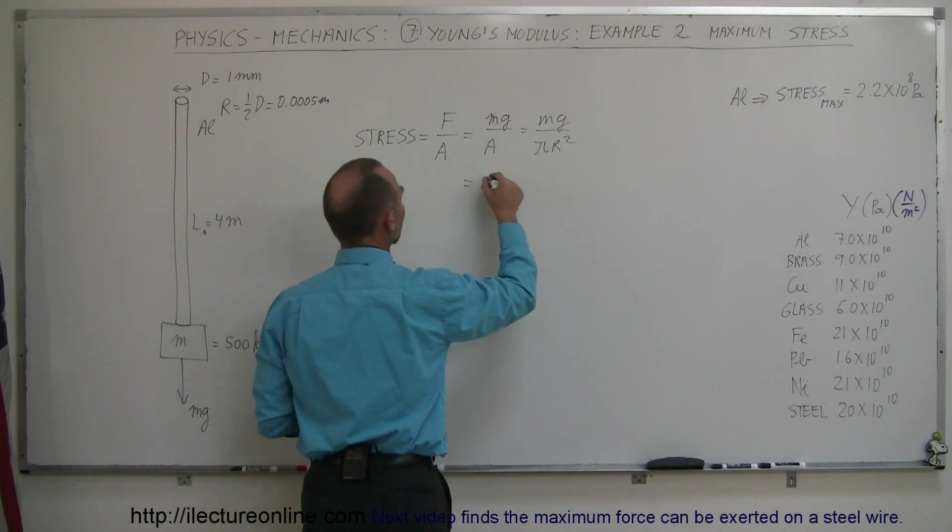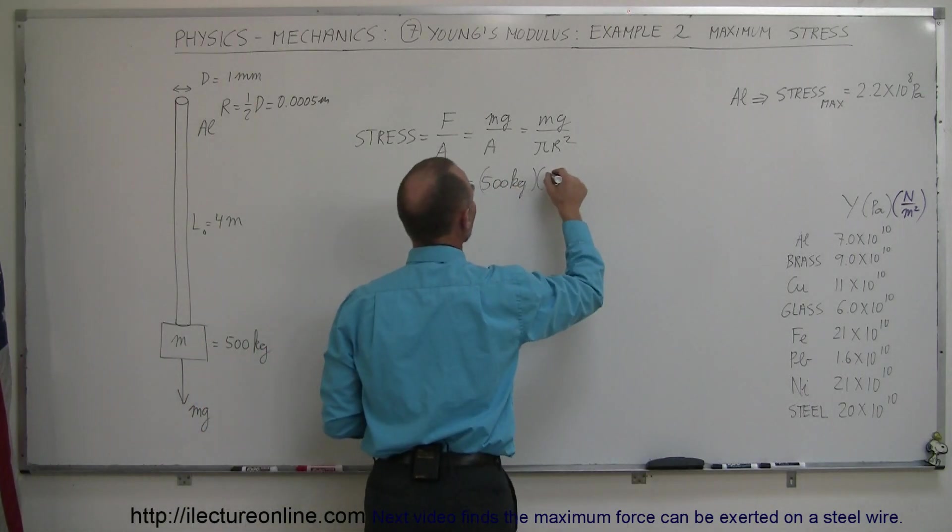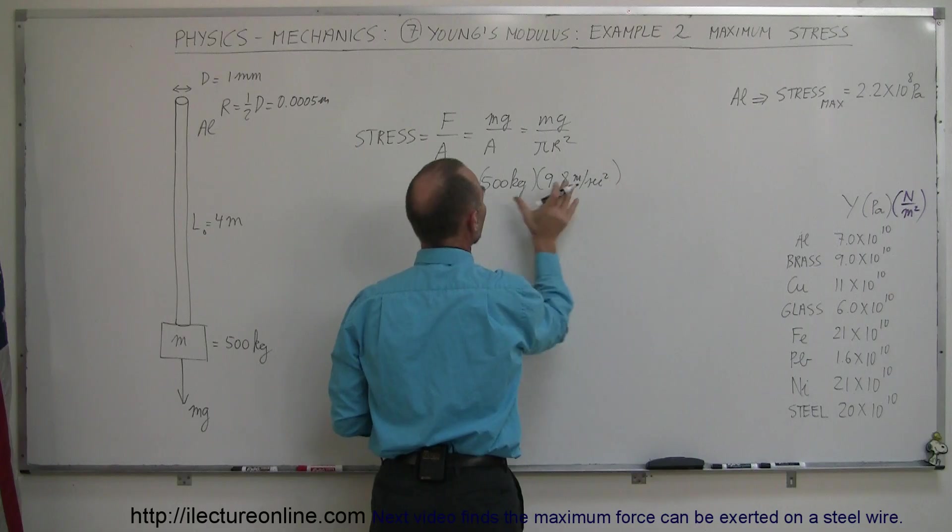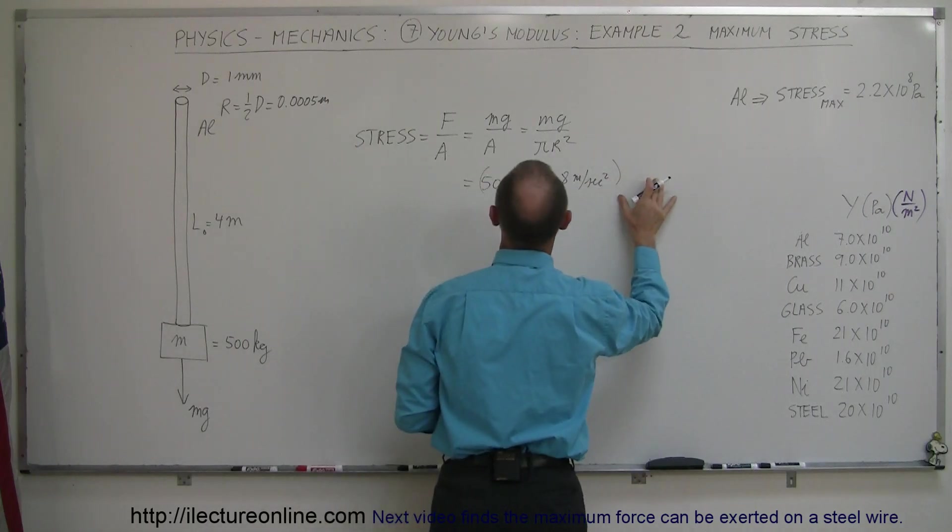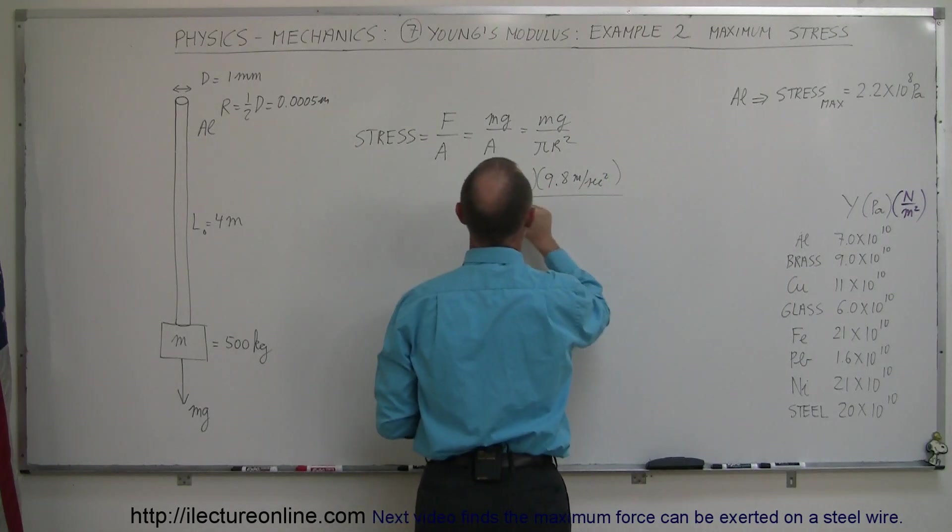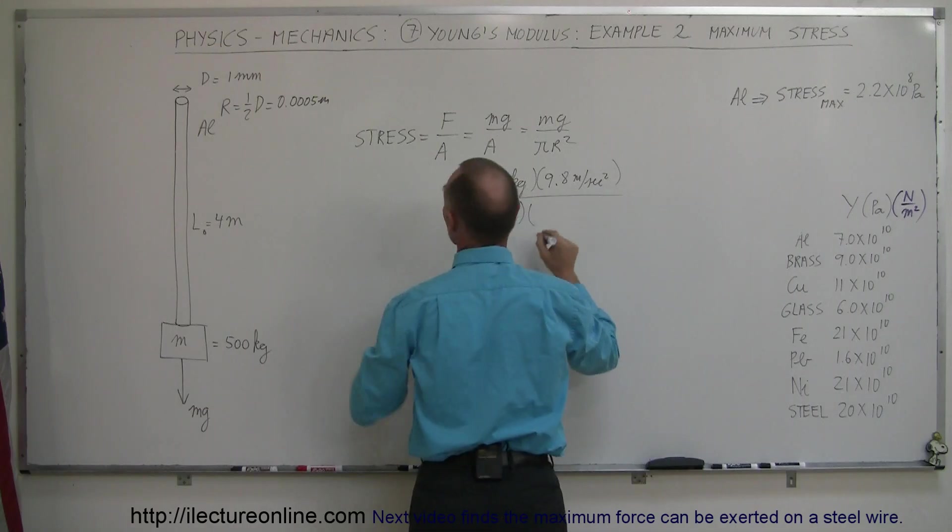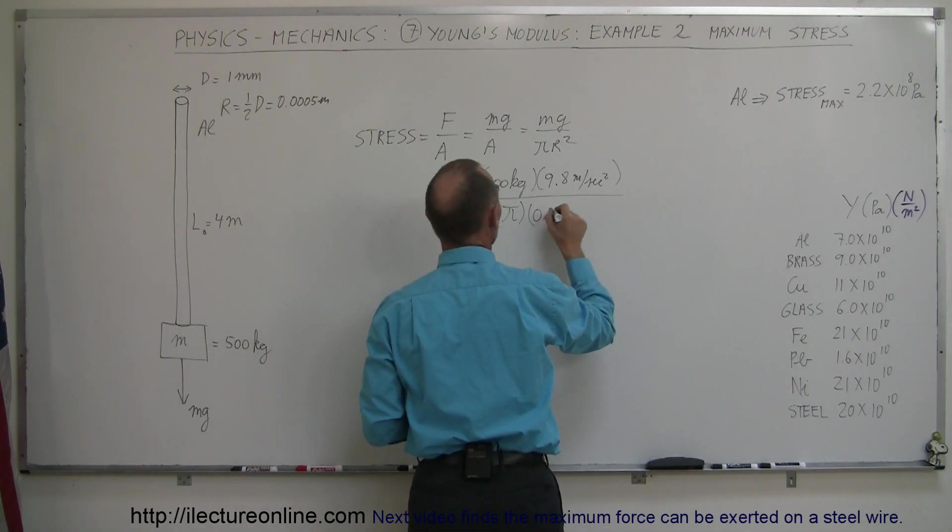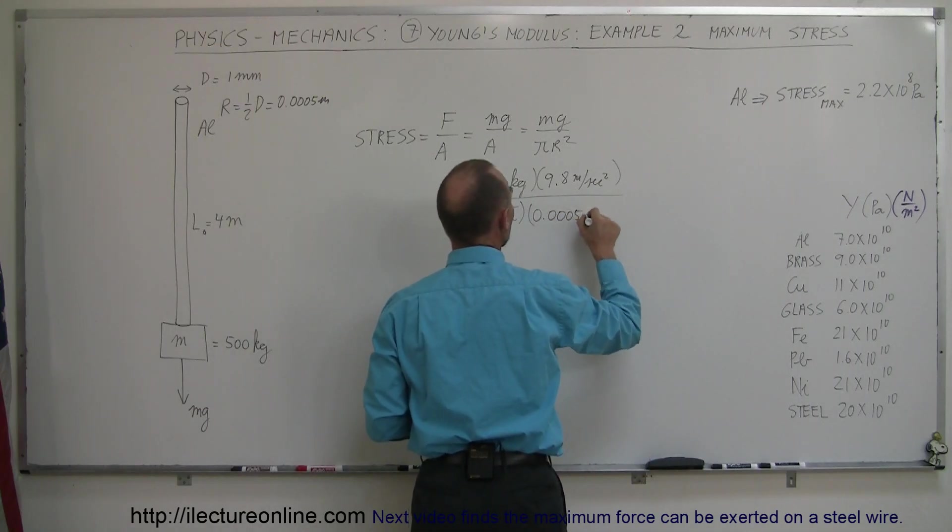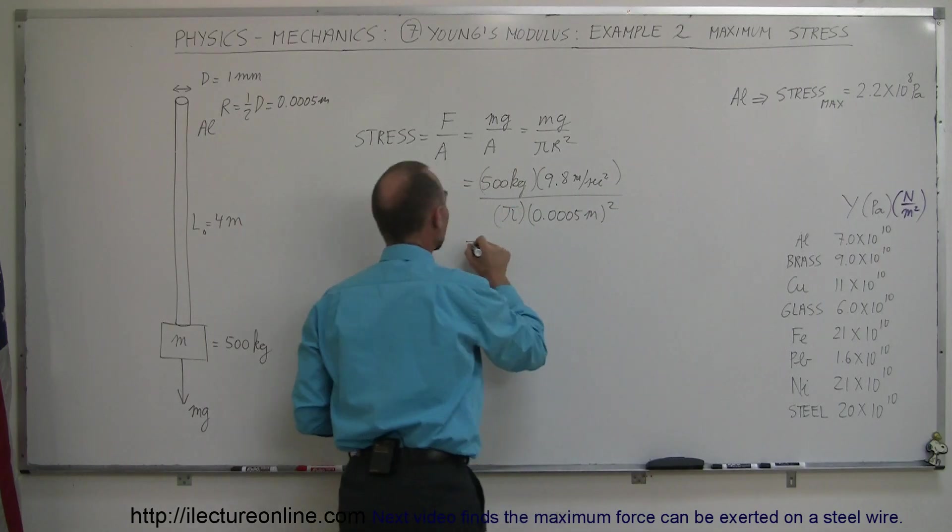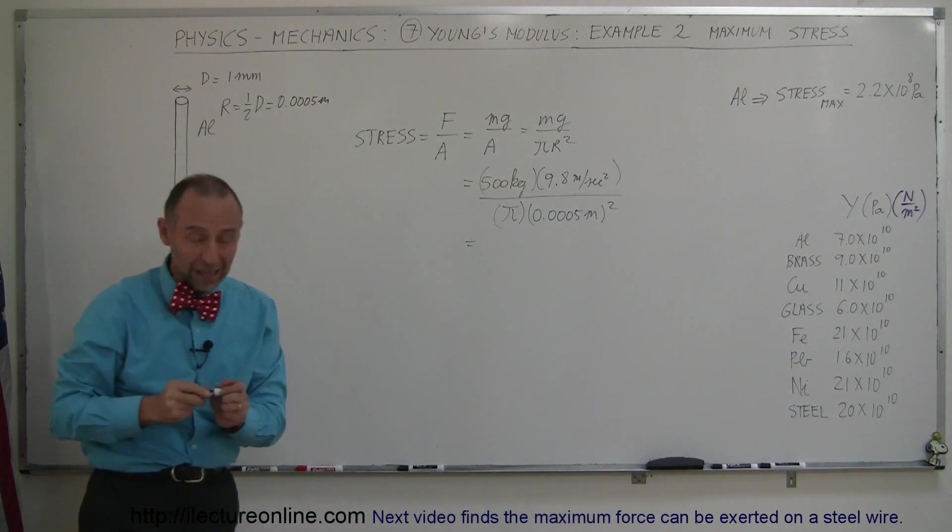We have 500 kilograms times acceleration due to gravity. So that would give us the weight divided by pi times the radius squared. And the radius in meters, 0.0005 meters squared. And that would give us the stress caused by hanging a weight on that wire.